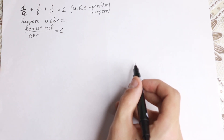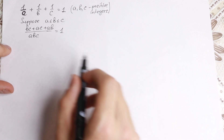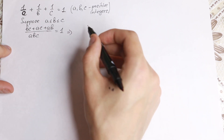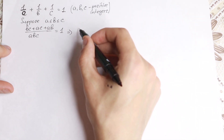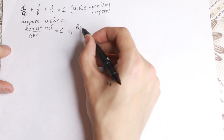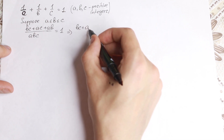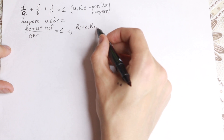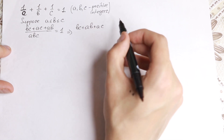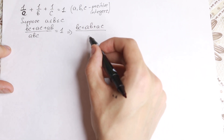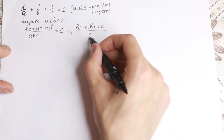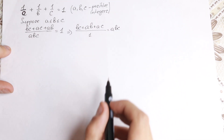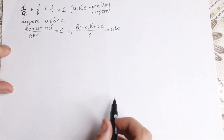The next step: let's cross-multiply both parts. If we use cross-multiplying, we will have bc + ab + ac equal to abc. So we just cross-multiplied both parts.